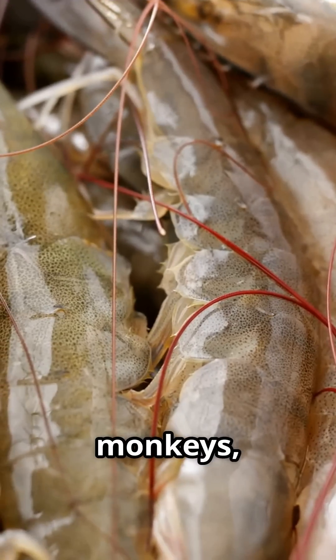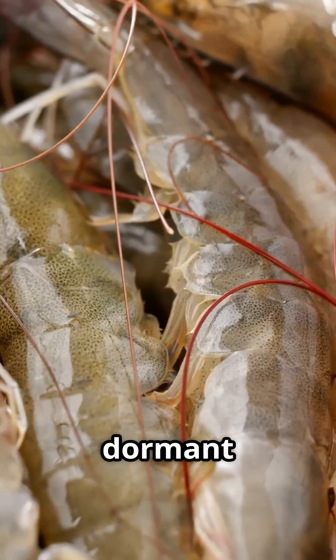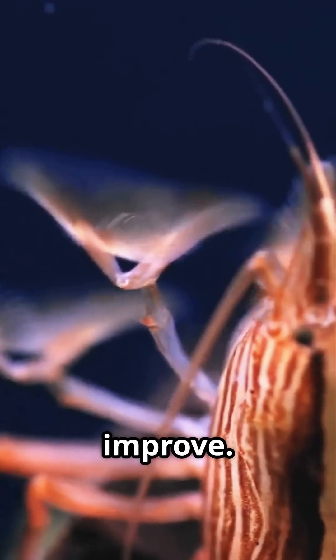Brine shrimp eggs, often sold as sea monkeys, can survive space travel in a dormant state and hatch when conditions improve.